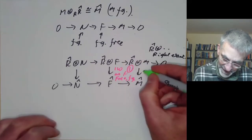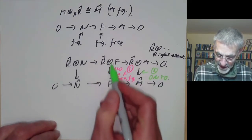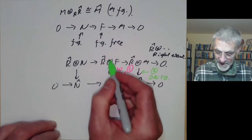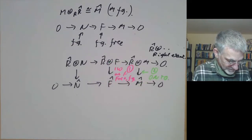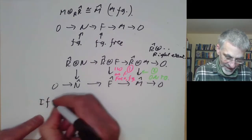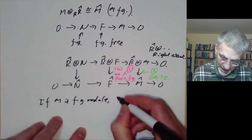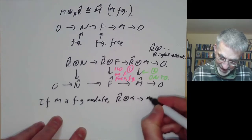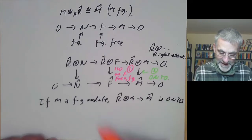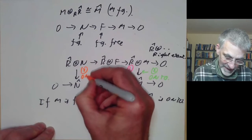Step two: the map M ⊗_R R̂ → M̂ is surjective, which follows easily from the fact that F ⊗_R R̂ → F̂ is an isomorphism and F̂ → M̂ is surjective. Step three: applying the surjectivity result to N (which is also finitely generated), the map N ⊗_R R̂ → N̂ is also surjective.